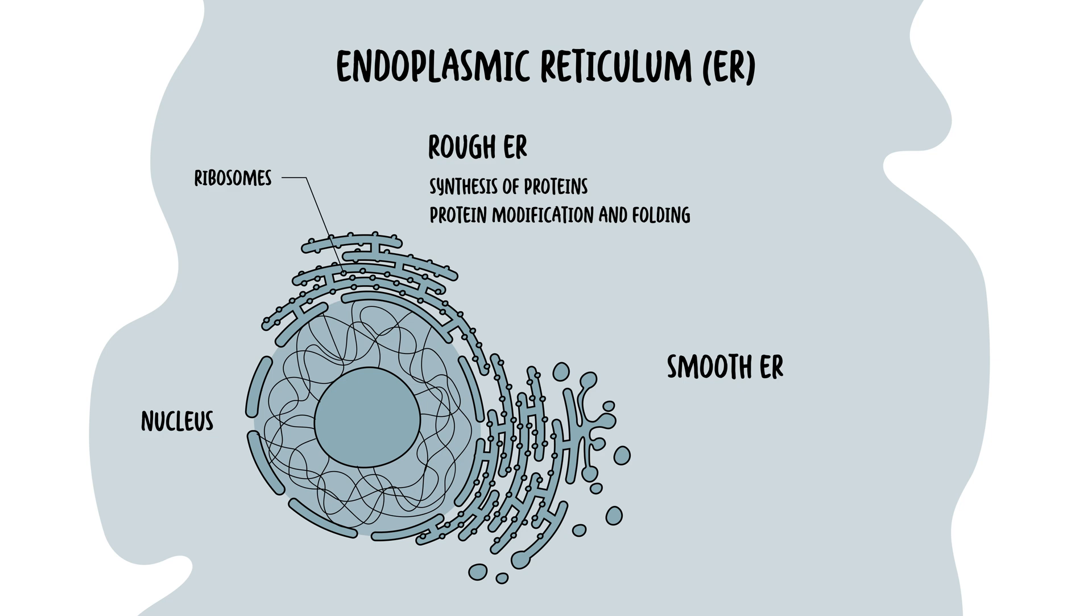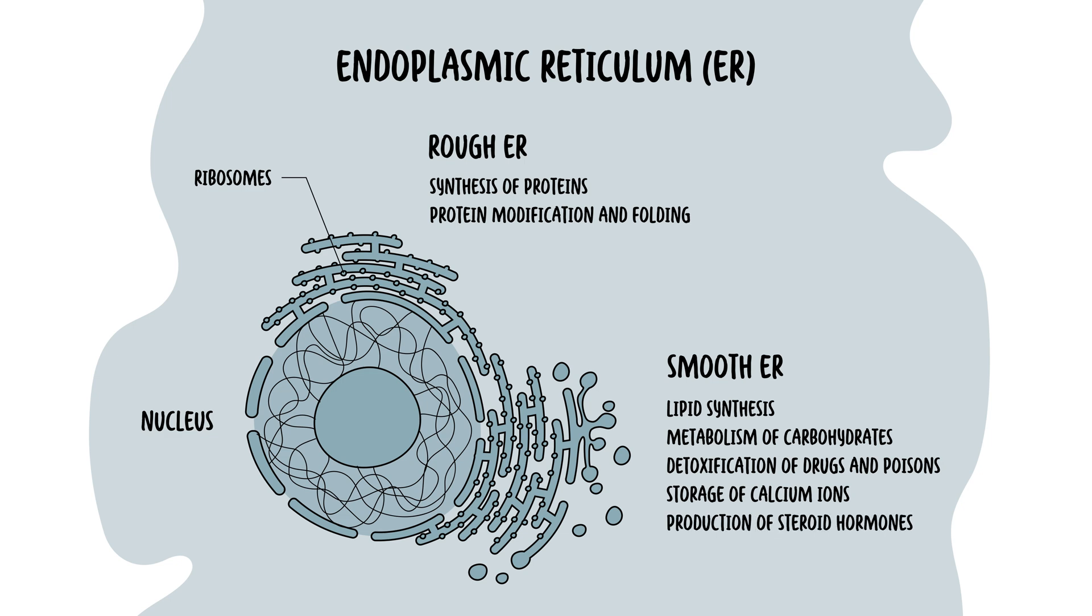The smooth endoplasmic reticulum, on the other hand, lacks ribosomes, and so that's why they appear smooth. It is involved in lipid synthesis, metabolism of carbohydrates, detoxification of drugs and poisons, and storage of calcium ions. The smooth endoplasmic reticulum also helps in the production of steroid hormones.